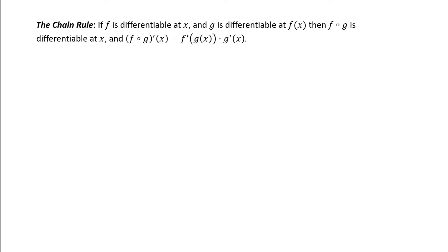We have something called the chain rule. It states: if f is differentiable at x and g is differentiable at f of x, then f composed with g is differentiable at x. And the derivative of f composed with g at x equals the derivative of f at g of x times the derivative of g of x. This can also be written as dy/dx equals dy/du times du/dx.